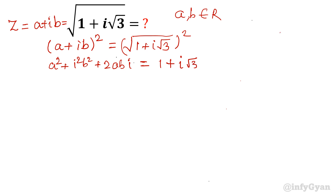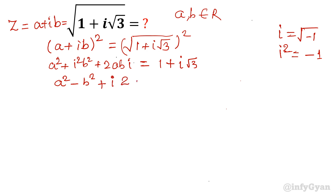Now we know that i is equal to the square root of negative 1, that is why i squared will be negative 1. So it will become a squared minus b squared plus i times 2ab, equal to 1 plus i root 3. Both sides are complex numbers, so we will equate the real and imaginary parts.